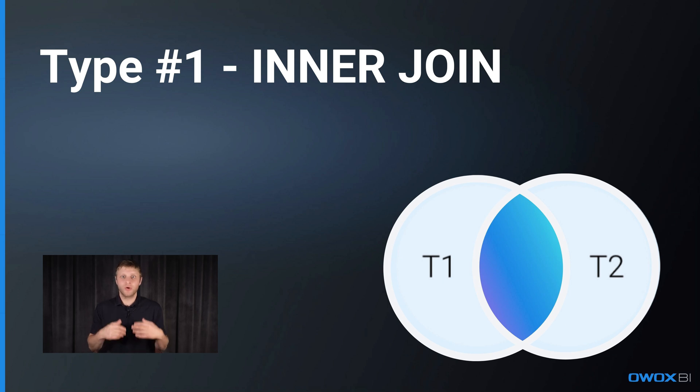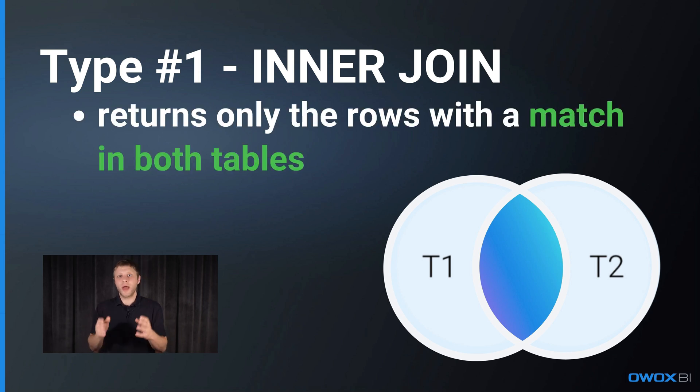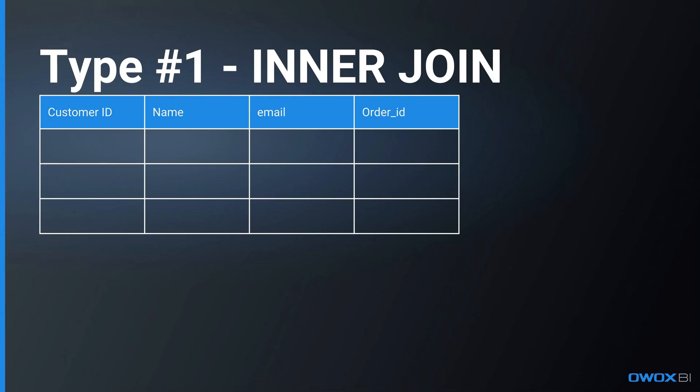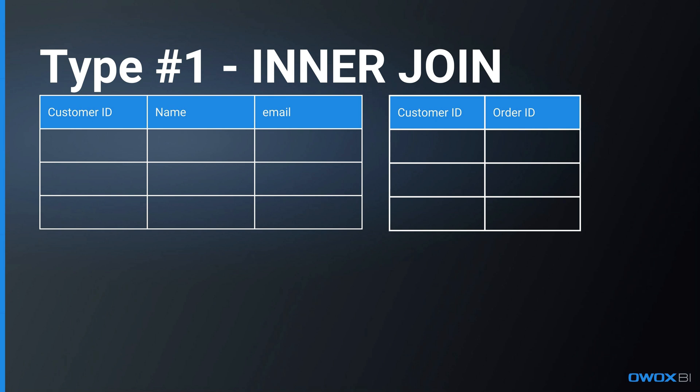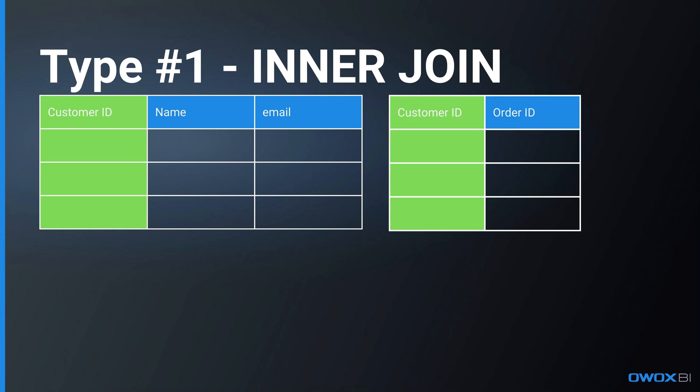The first type is Inner Join, or simple join — combining rows from two or more tables based on a common attribute, returning only the rows with a match in both tables. It's the most commonly used join operation, ensuring that only related data from both tables is included in the result set. Let's say we want to get information about our customers — their names, contact details, and their purchases. We have a table of customers and a table of orders. There is a common key in those tables, customer ID, which acts as a primary key for the customers table and as a foreign key for the orders table.